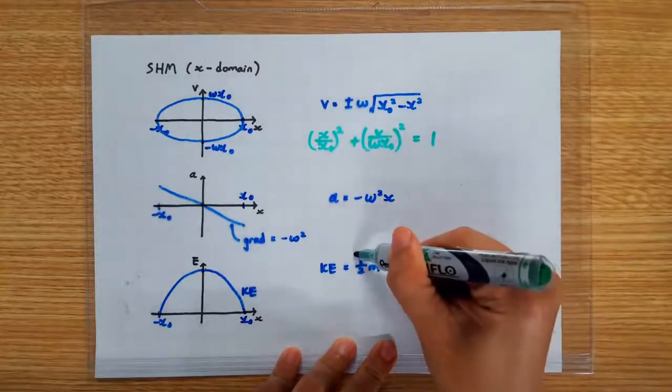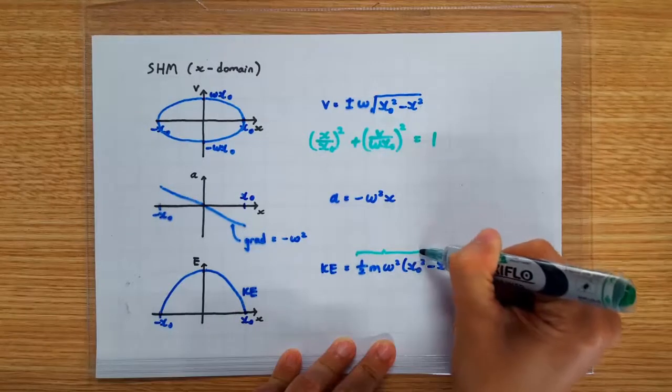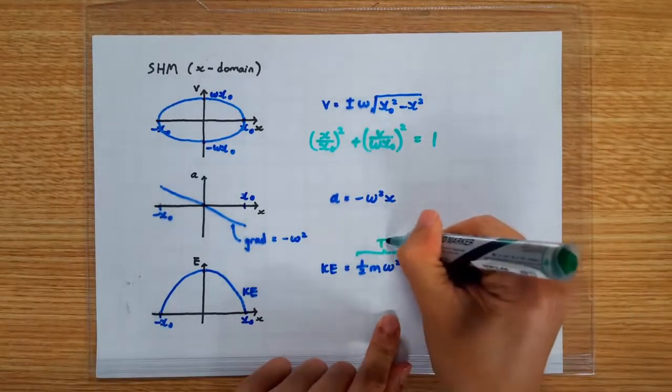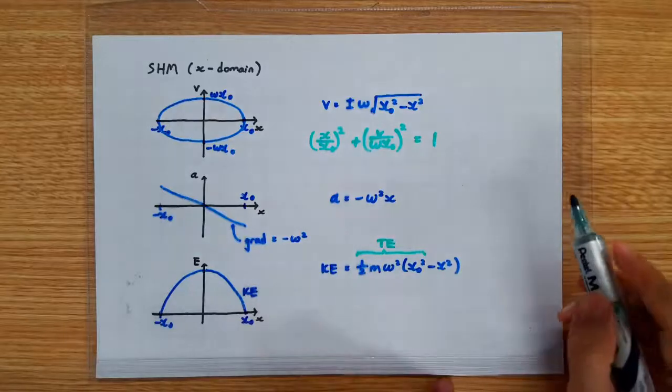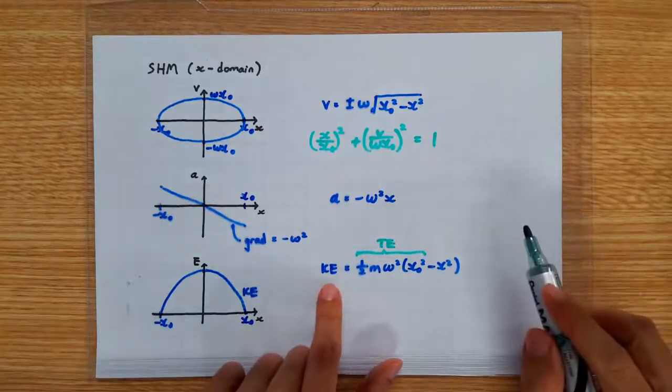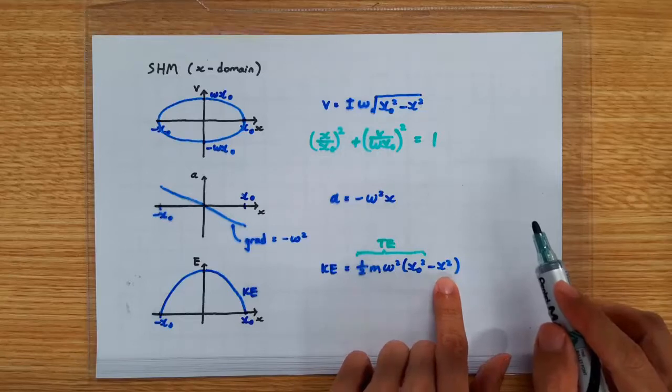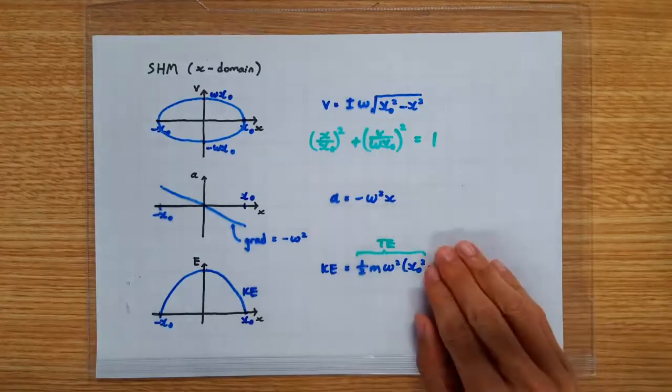Instantly, we recognize this to be the maximum KE, which is, of course, equals to the total energy of the oscillation. So that's the maximum KE,